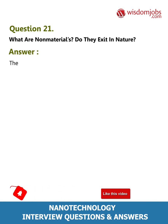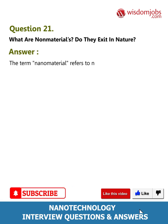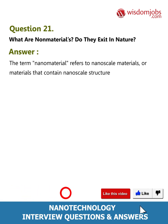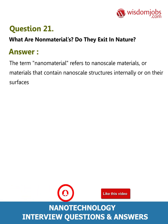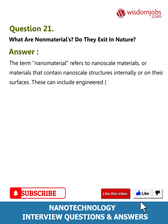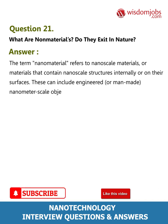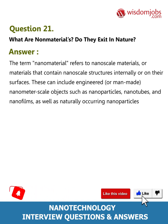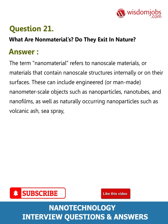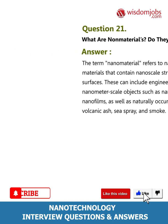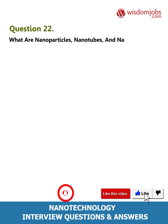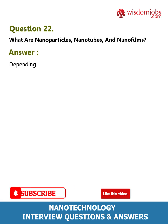Question 21: What are nanomaterials? Do they exist in nature? The term nanomaterial refers to nanoscale materials, or materials that contain nanoscale structures internally or on their surfaces. These can include engineered or man-made nanometer-scale objects such as nanoparticles, nanotubes, and nanofilms, as well as naturally occurring nanoparticles such as volcanic ash, sea spray, and smoke.